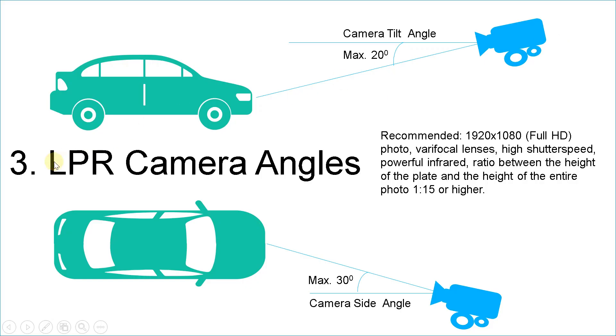LPR camera angles. Camera tilt angle is maximum 20 degrees and camera side angle is maximum 30 degrees.